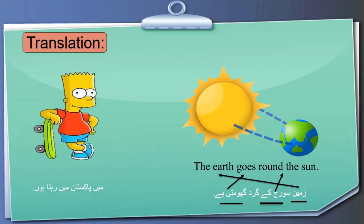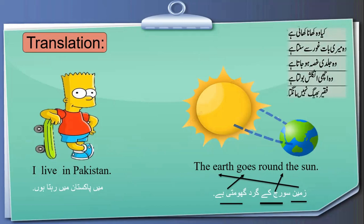Here is a translation drill. For instance, 'I live in Pakistan' — translating from Urdu into English using present simple tense. To recognize present simple tense in Urdu, look at the last two words: endings like 'ti hai,' 'ta hai,' or 'hai.' Example Urdu sentences: 'Kya woh khana khati hai?' 'Woh meri baat ghoor se sunta hai.' 'Woh jaldi gussa ho jata hai.' 'Woh achi English bolta hai.' 'Faqir bheek nahi maangta.' Students, please translate these and write the English answers in the comment box.